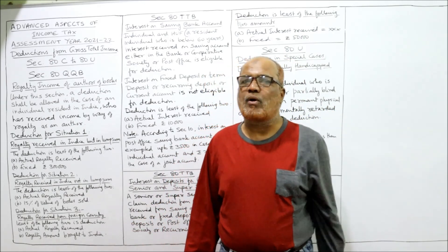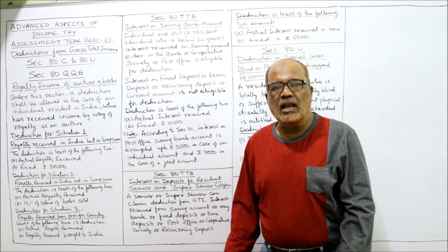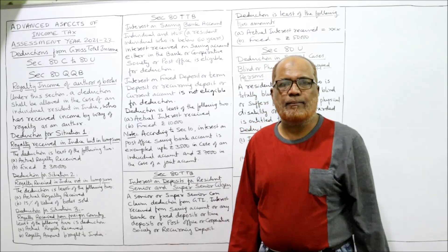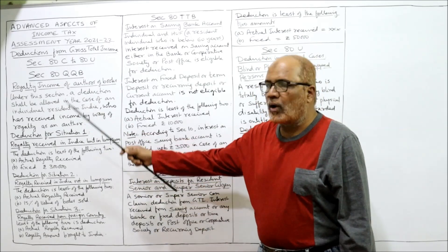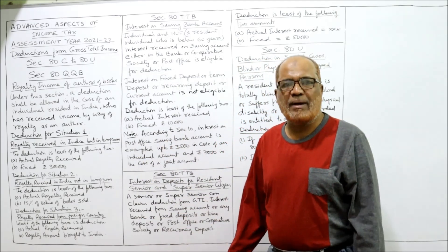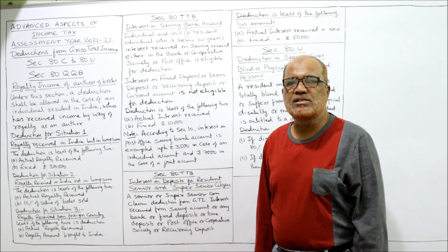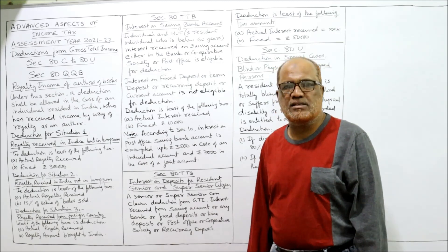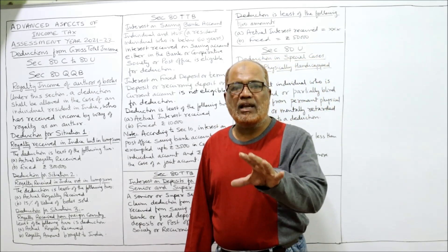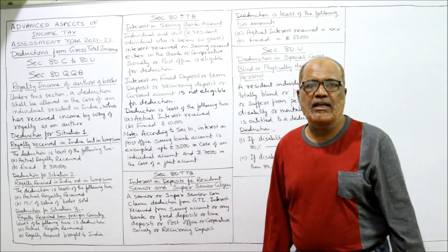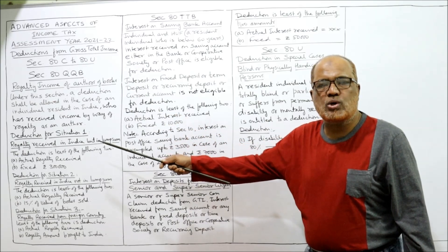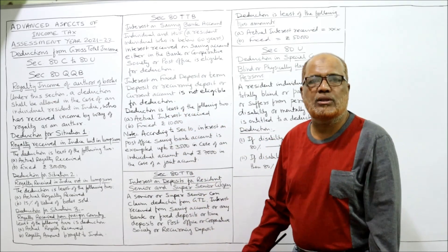This is the last video where a few more deductions are going to be explained: royalty received, interest on saving bank deposit, interest received by senior and super senior citizens, and section 80U. These are the final deductions I am going to explain in this video. Before starting the explanation, take a screenshot of the deductions which I have written on the board.